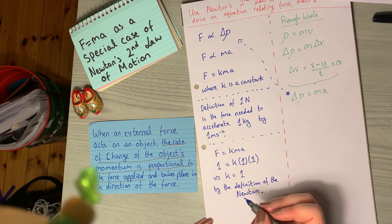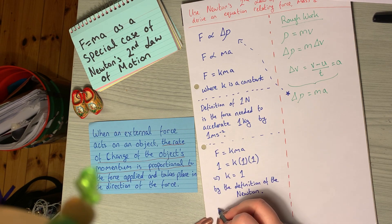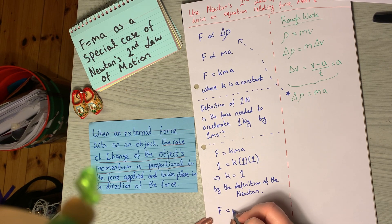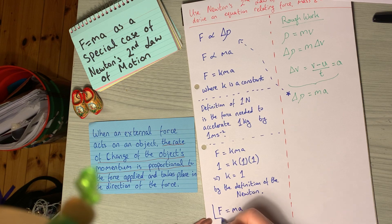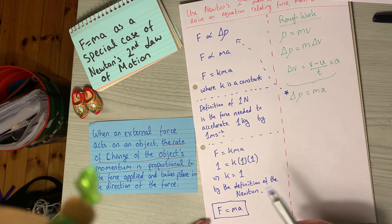Then our last step is to sub that back into the formula. So that means that we have F equals Ma as required. And that is your derivation done.